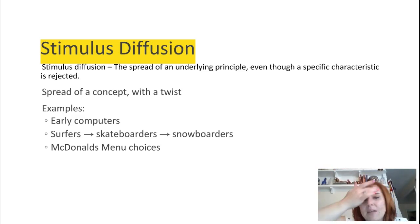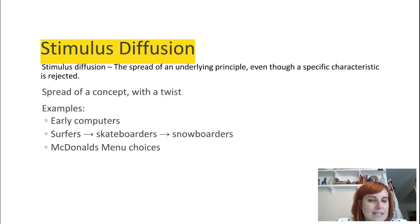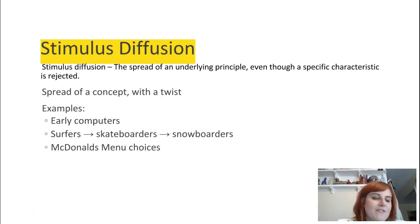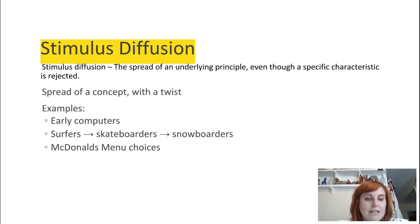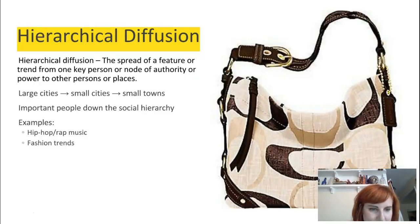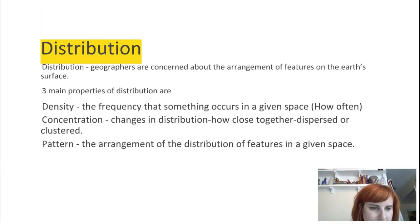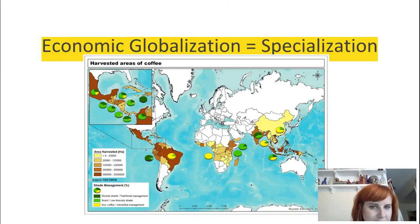Stimulus diffusion is the spread of an underlying principle, but with a twist. Something spreads, but different places are going to do it differently. Computers looked different from place to place early on. Surfing diffused to different places — if you don't have water, it kind of turned into skateboarding; if you had snow, it turned into snowboarding. McDonald's menu choices are a really good example of stimulus diffusion — I'll go back to that really quick.